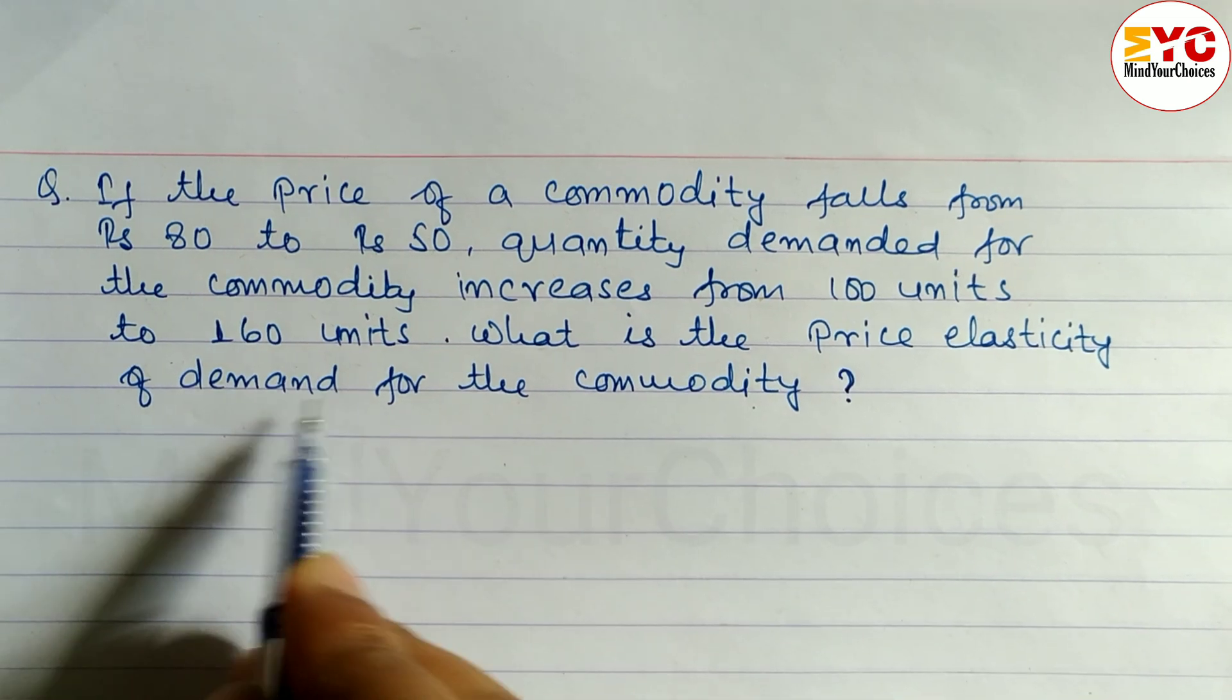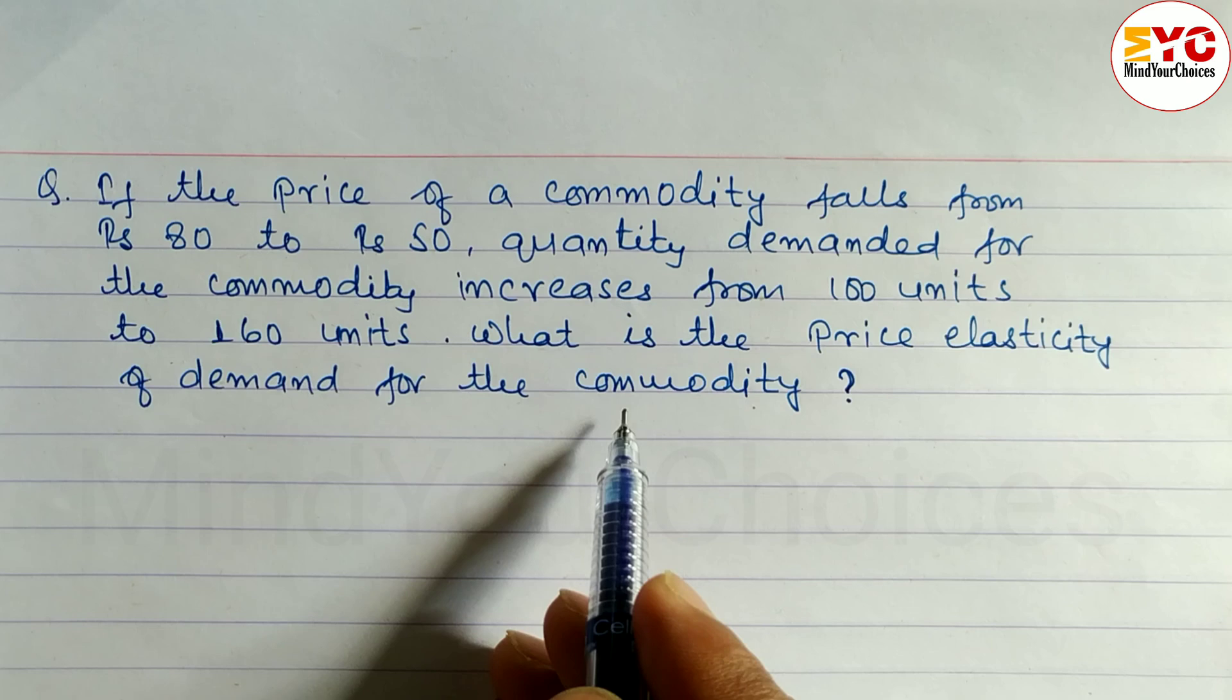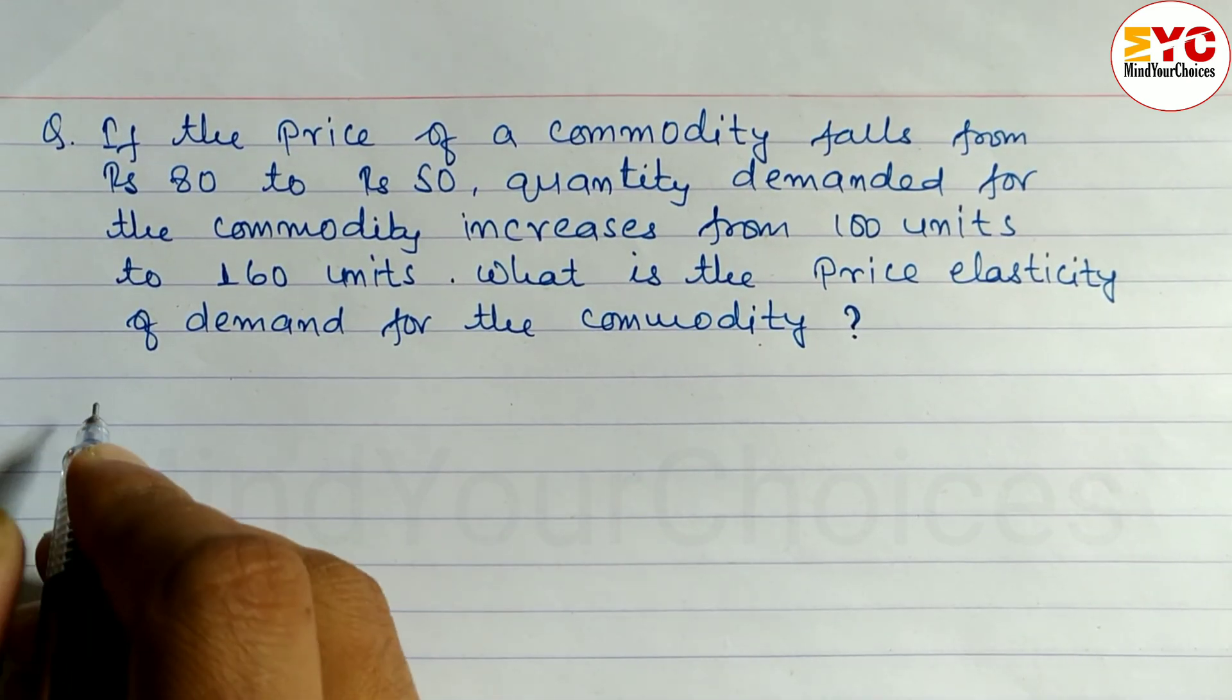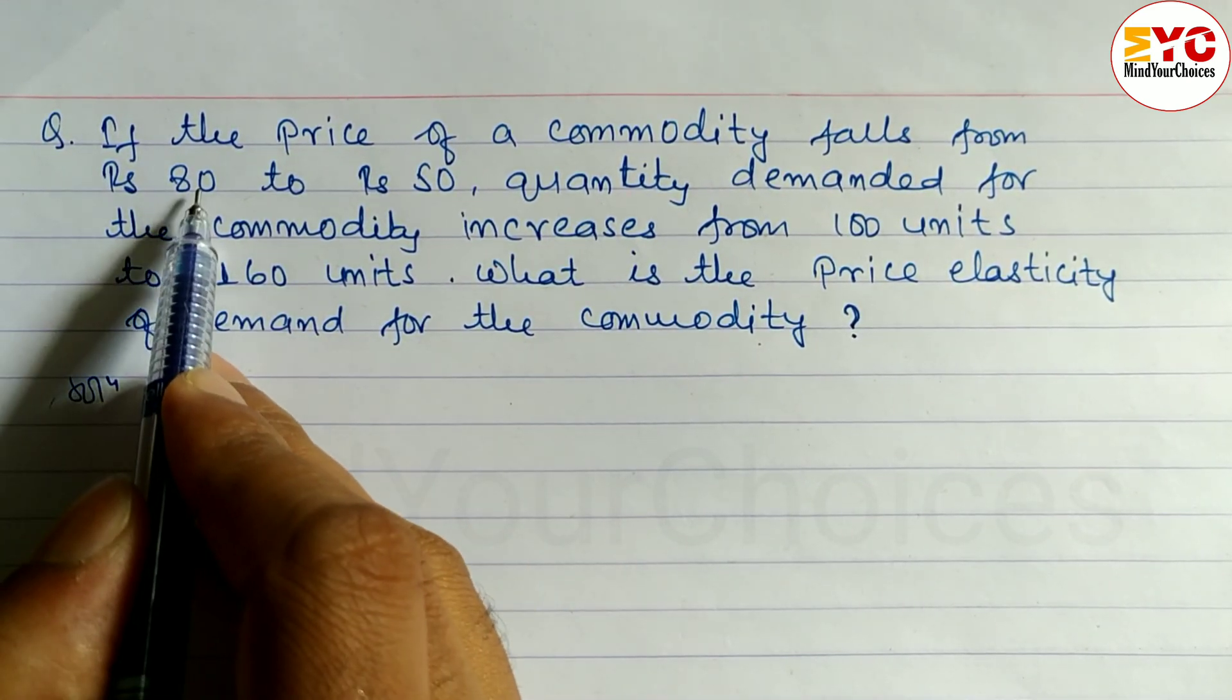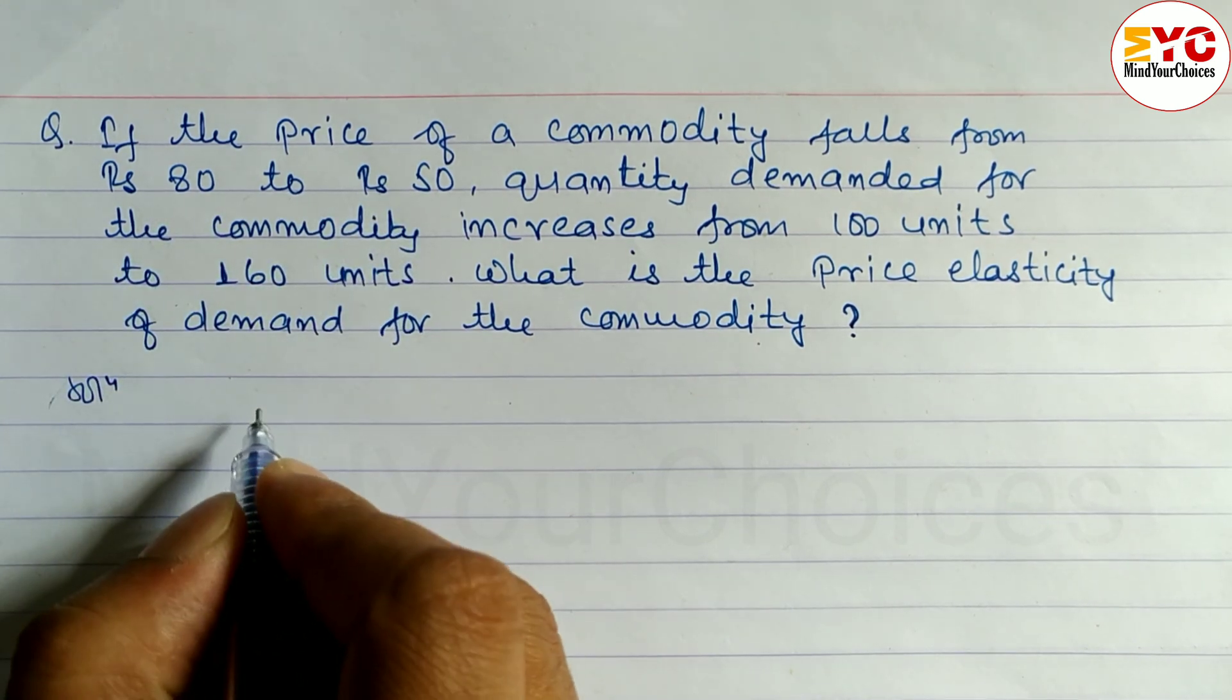So let's start here. Initial price P is equal to 80. The new price is equal to 50. So we have to write here.